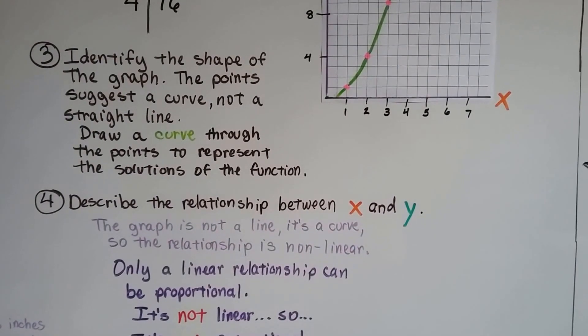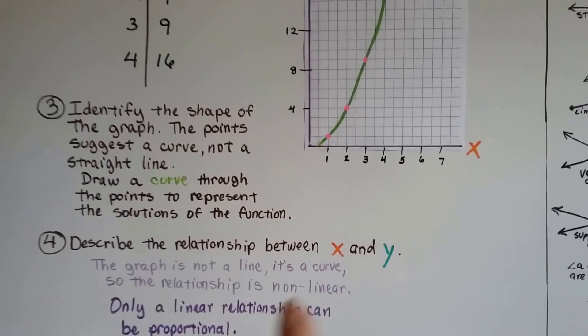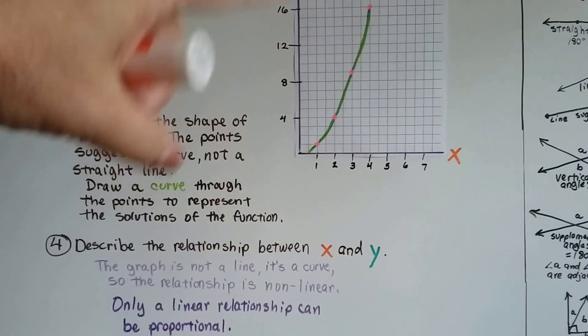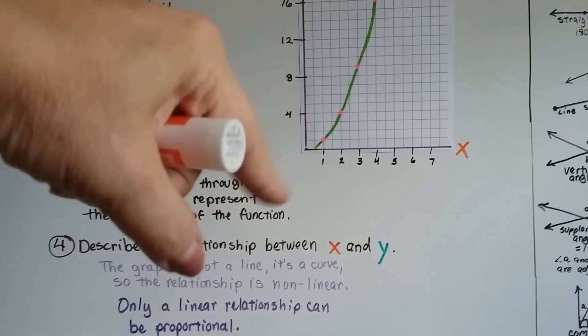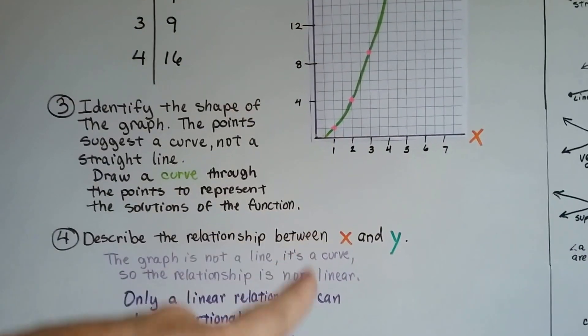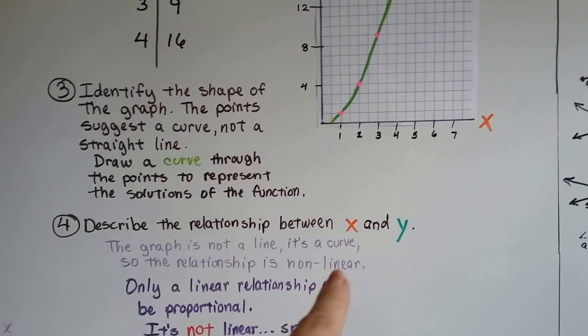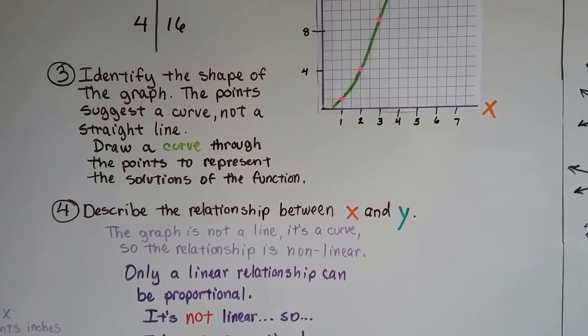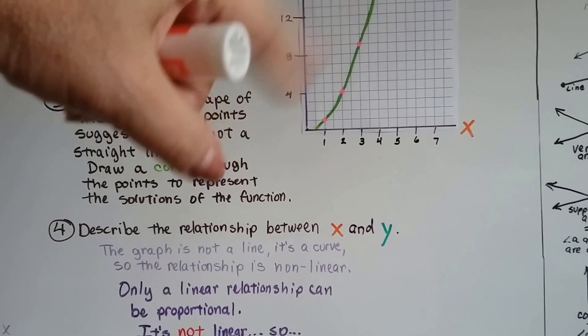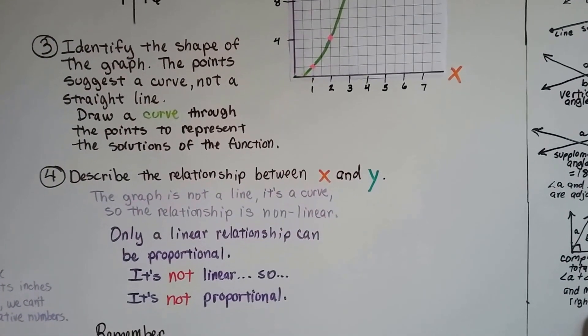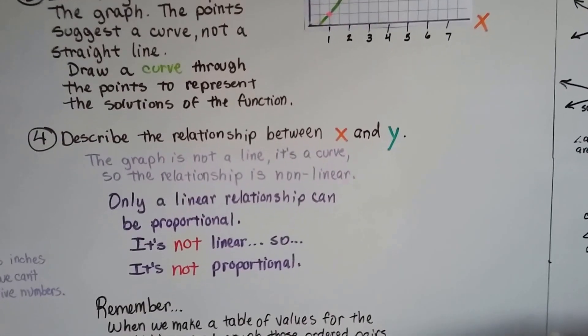We describe the relationship between x and y. Well, this graph is not a line. It's a curve. So the relationship is non-linear. It didn't make a line. So it's non-linear. Think of it that way. Only a linear relationship can be proportional. So it's not linear. So it's not proportional.